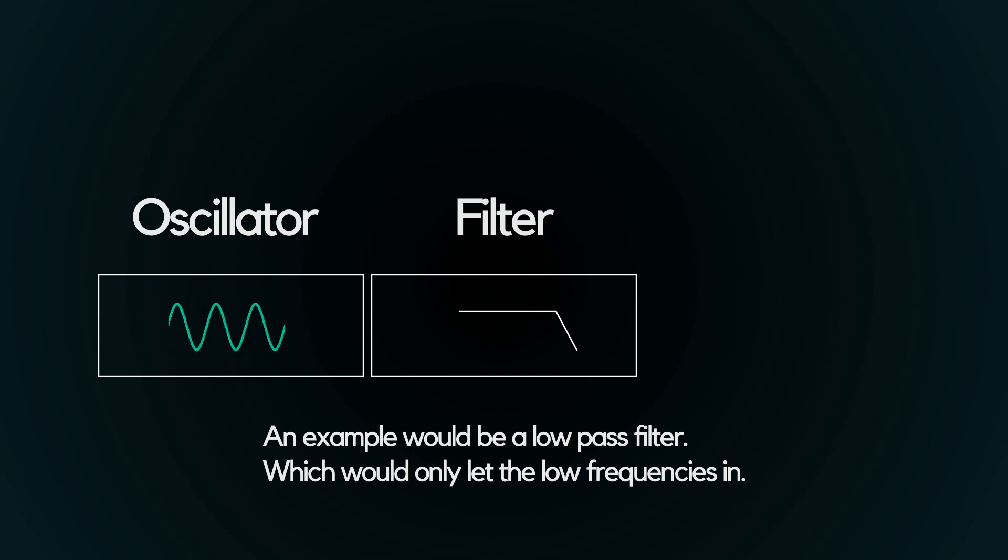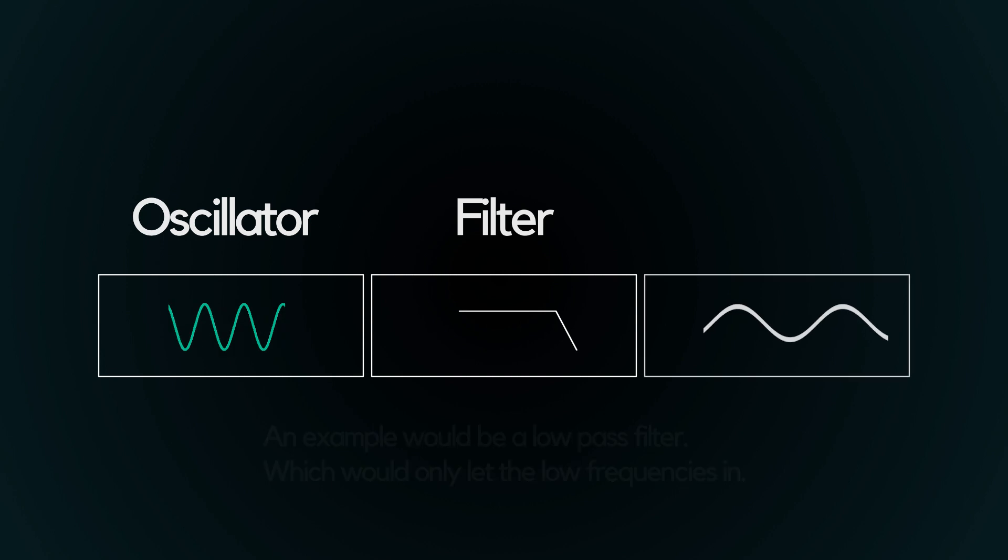This results in a much more muffled sound with the higher, more treble-based frequencies being cut off. Finally, the amplifier changes the amplitude of the sound, resulting in louder or quieter tones. With these three tools, we can now do a great deal with this basic sound.